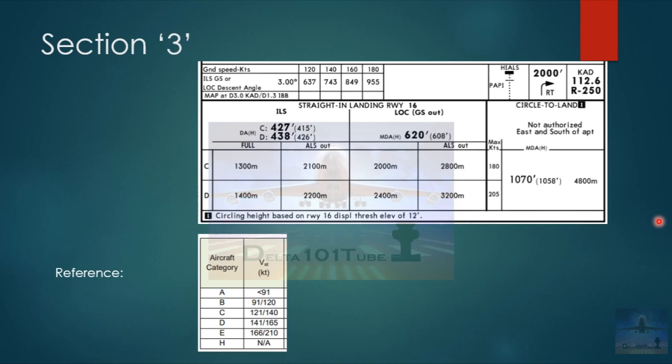Just for information, if we are carrying out a non-precision approach, like an approach using a VOR or an NDB, then the approach uses a navigation system for course deviation but not providing glide path information. In that case, we will have to fly the aircraft to minimum decision altitude or MDA.